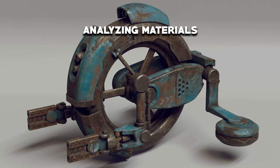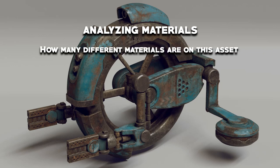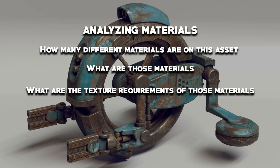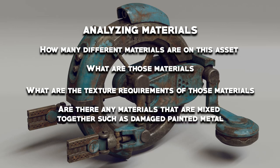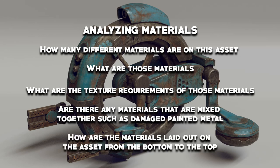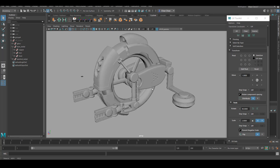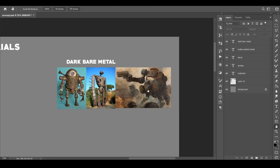Now I know the type of look I'm going for. I'm going to start to analyze what kind of materials I'll need — things like how many different kinds of materials are on this asset. It's very helpful to make a list of every type of material you'll have to create. Once you're clear about all the materials, think about what kind of textures you'll need to collect. Also be aware of any mixed materials on the list, such as coated paint — the material mask for something like that is more complex than a single material. It's also important to analyze how the material is laid out, what is underneath and what is on top. In general, it's better to build your material according to how it's built in real life.